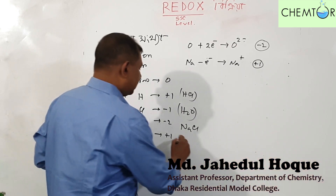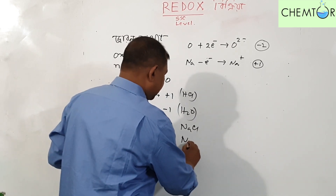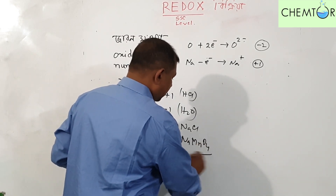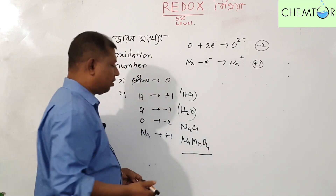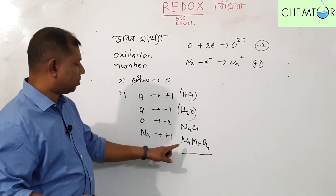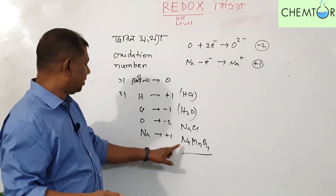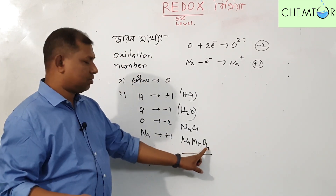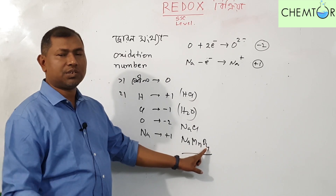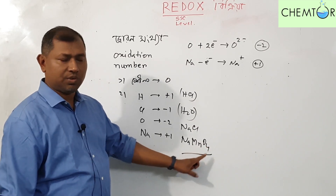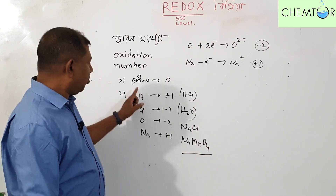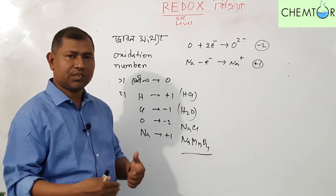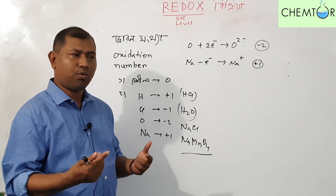When NaMnO4 is used, sodium is plus 1 and oxygen is minus 2. Now, the most important thing is we have to find the oxidation state of manganese.